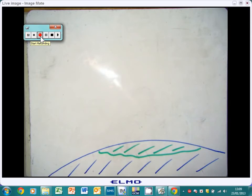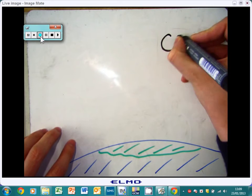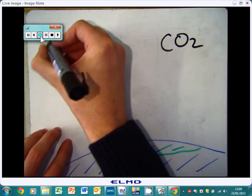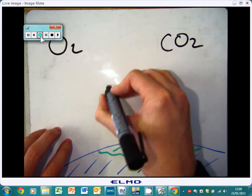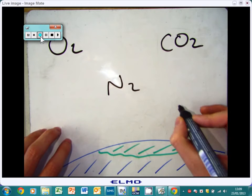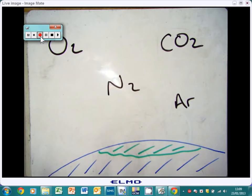So in the atmosphere today, we have a few different gases. We have carbon dioxide, oxygen, nitrogen, and a little bit of argon. There are some other gases, but these are the main ones that you need to know.